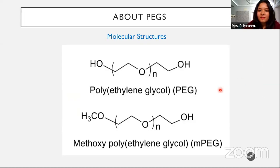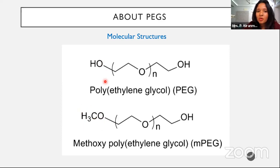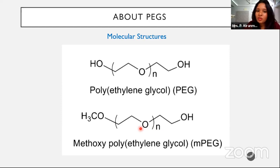When using PEG for pegylation, most of the time we mask one end hydroxyl group with a methoxy group — this is called end-capping — to avoid double reactivity, since this group is reactive at both ends. This gives us MPEG, which is the most commonly used reagent for pegylation. Molecular weights can differ, but most of the time it is end-capped with methoxy groups.